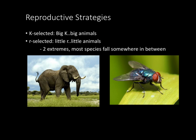Reproductive strategies: K-selection — think uppercase K for big animals like elephants and humans. These animals reproduce and have few offspring, but those offspring are more likely to survive into adulthood. R-selection — lowercase r for little animals like insects and fish. These animals have a lot of offspring with a very low rate of reaching adulthood, so many eggs are expected to die before maturity. These are both extremes, and most species fall somewhere in between.